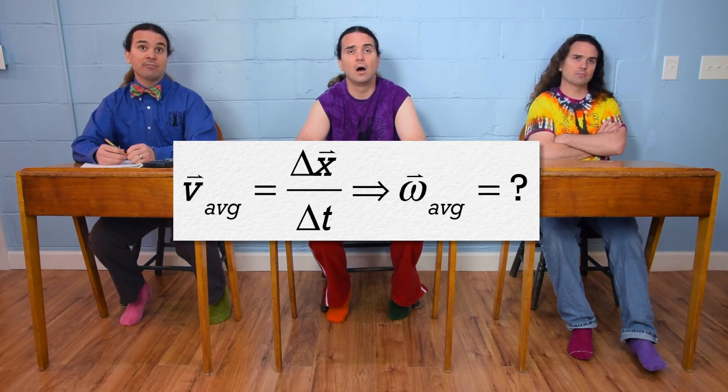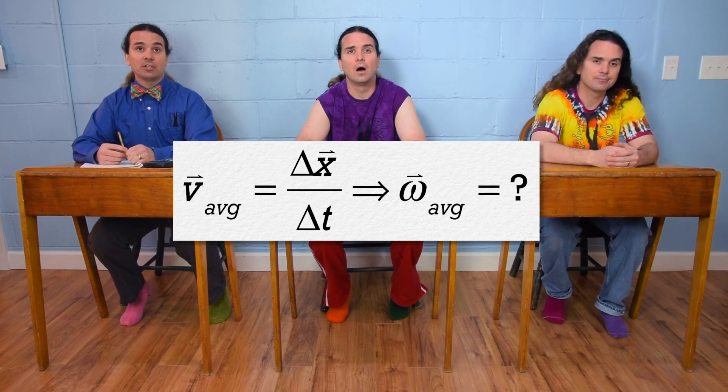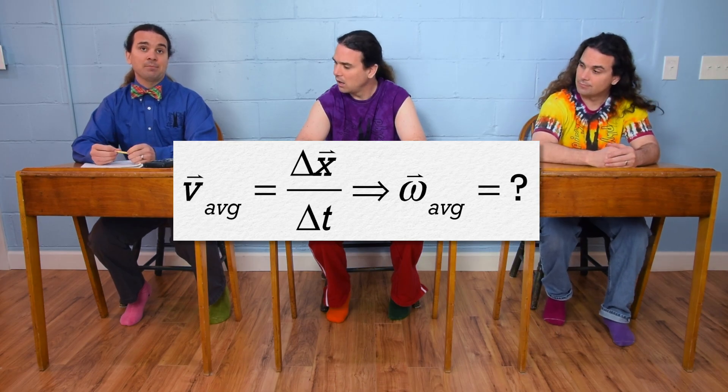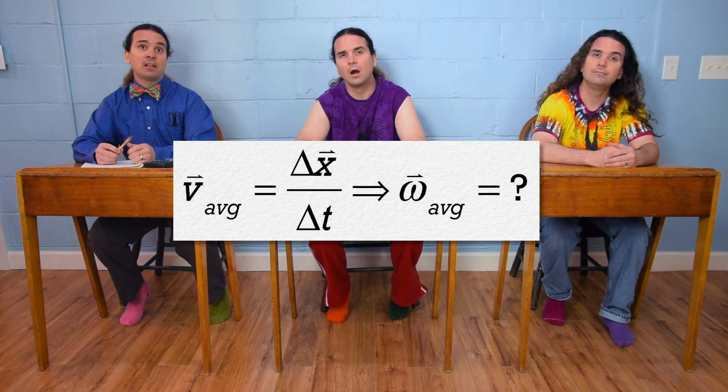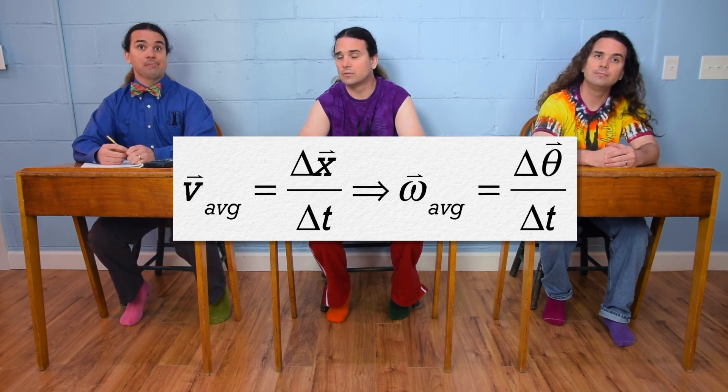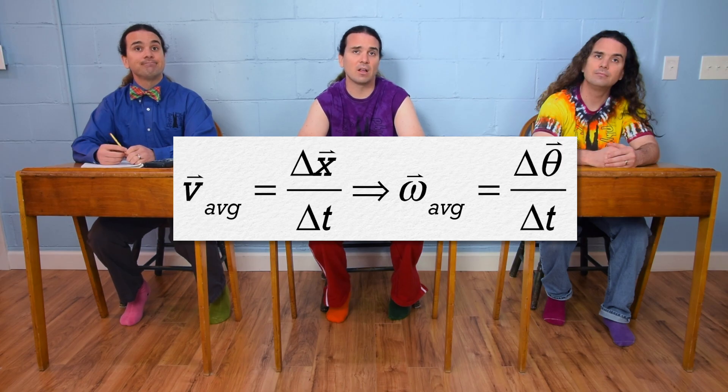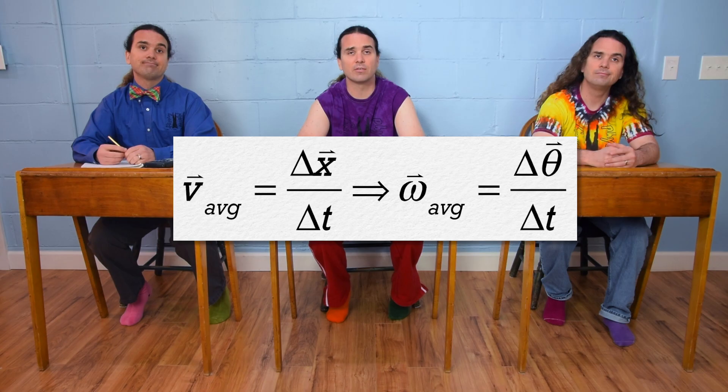Well, average linear velocity equals the change in linear position over change in time. So average angular velocity must equal the change in angular position over change in time. So average angular velocity equals change in theta or angular displacement over change in time.